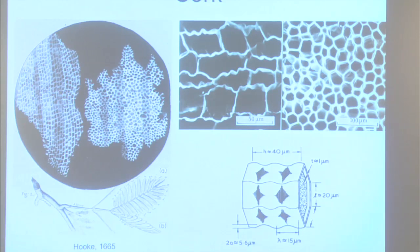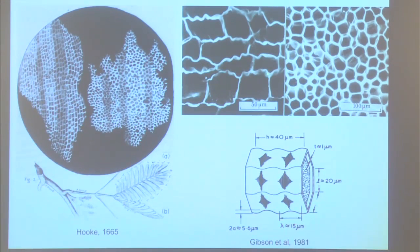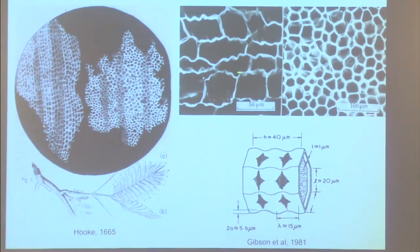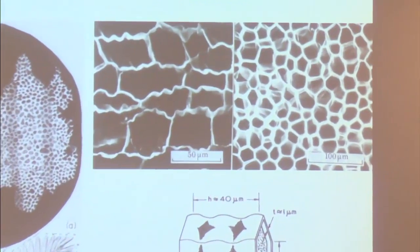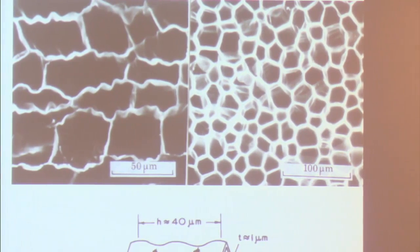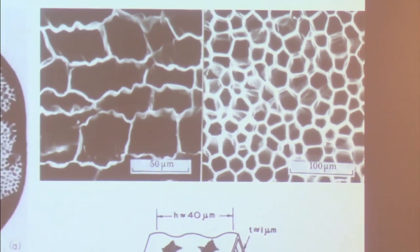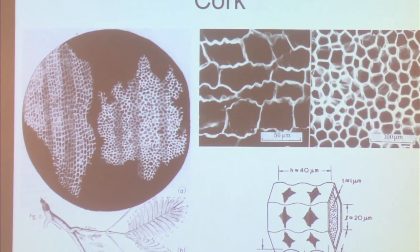These are our SEM pictures taken many years later, and we obviously have a higher resolution with the SEM. You can see this section here corresponds to that one there with the more or less square cells, and this one here corresponds to this section here. We have higher resolution, but Hooke had the right general idea about the cork cells.